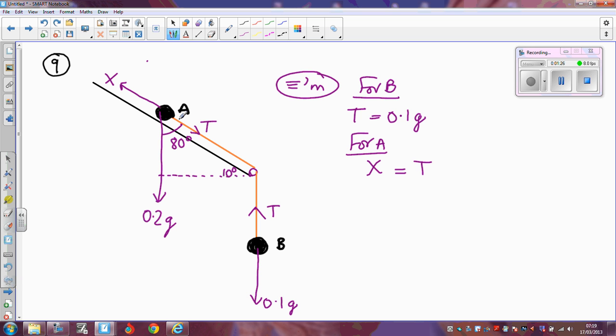So we've got x acting upwards, acting downwards, we've got t. We've also got the component of the weight, which is acting in the same direction as t, and that's going to be 0.2g, so that's positive, 0.2g cos 80 degrees. Now, we already know t, we already know that t from up here is 0.1g, x is going to be 0.1g plus 0.2g cos 80 degrees.